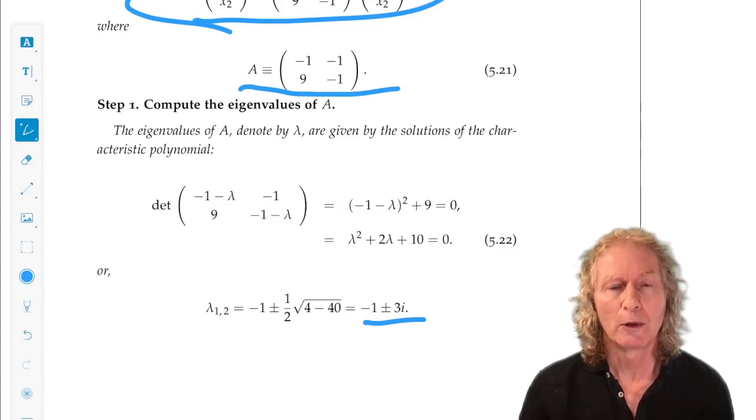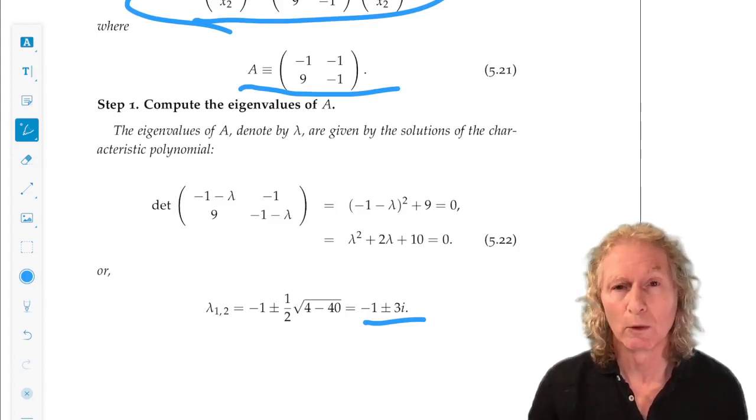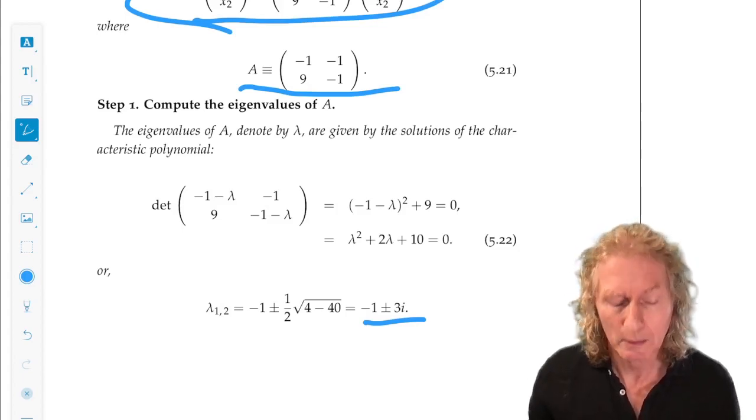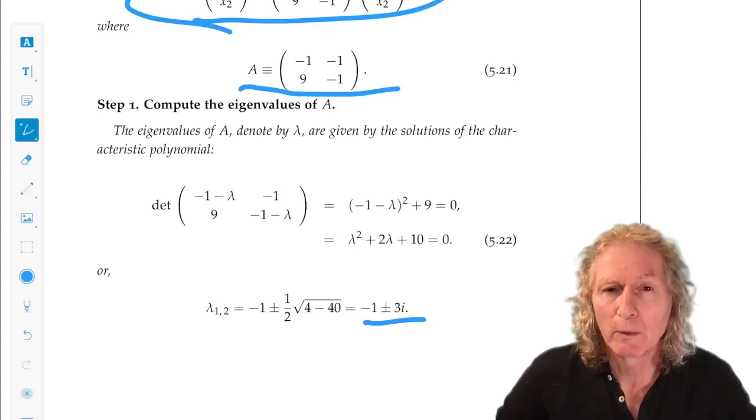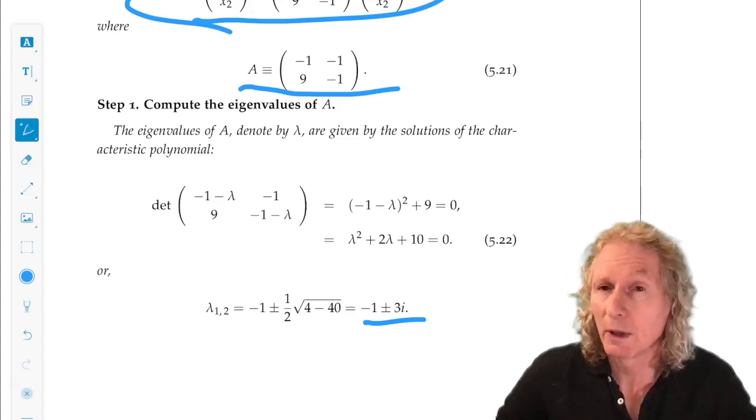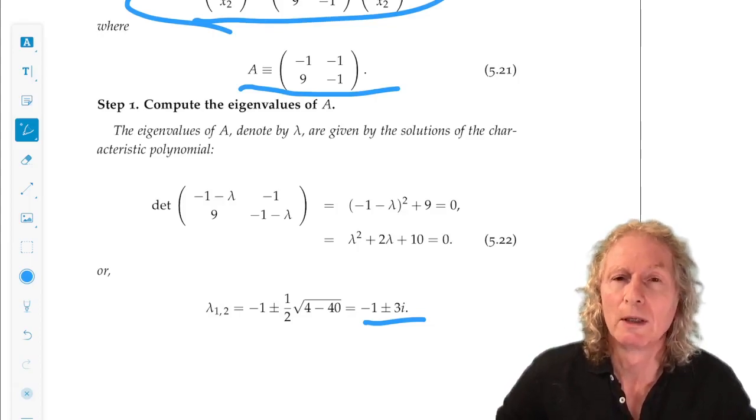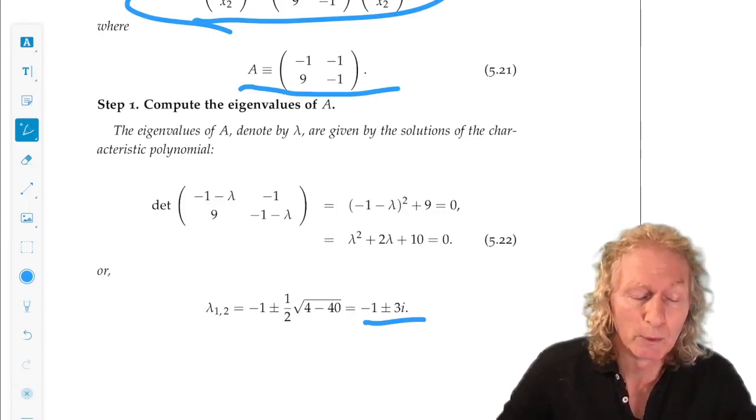In this course, our ODEs are going to be real. They're going to be defined on R^n in general. So, if we have a complex eigenvalue, its complex conjugate partner is also an eigenvalue, and we see that in this case.